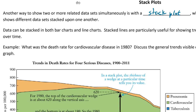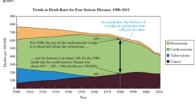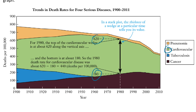For example: what was the death rate for cardiovascular disease in 1980? This graph shows pneumonia, cardiovascular disease, tuberculosis, and cancer stacked. Since it's stacked, it's really easy to see the gaps between the lines. For 1980, we look at the thickness of the green part representing cardiovascular disease — the top is about 620 and the bottom is about 180, so we subtract the two to get about 440 deaths per 100,000 people in 1980.